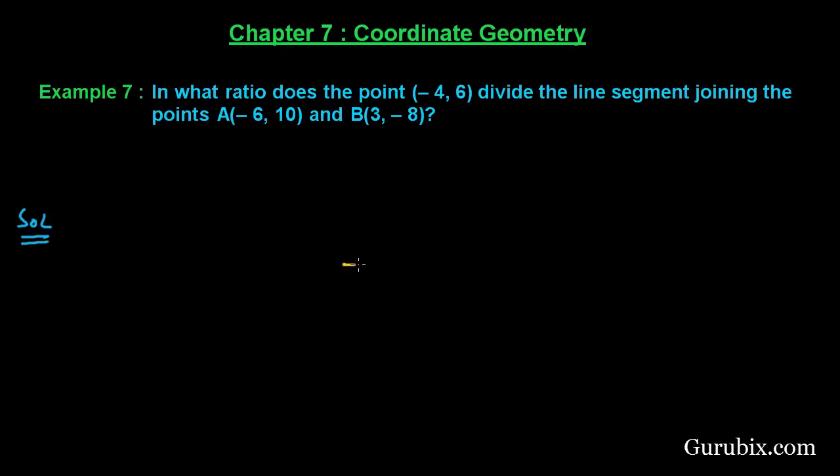First of all, let us draw a straight line whose endpoints are A, whose coordinates are (-6, 10) and B, whose coordinates are (3, -8).